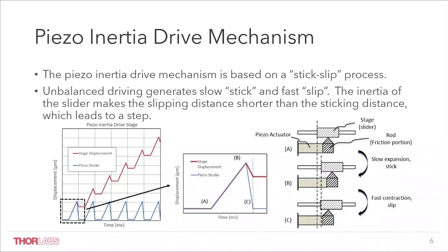In summary, the unbalanced driving generates a slow stick and a fast slip. The inertia of the slider makes the slipping backward distance shorter than the sticking forward distance, producing a net step forward over the whole cycle.